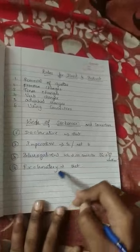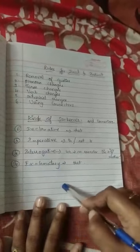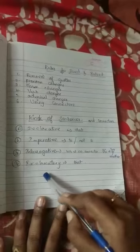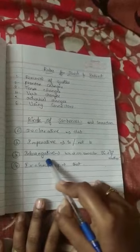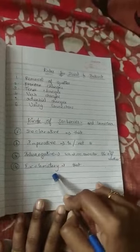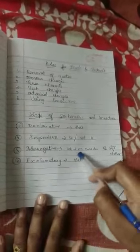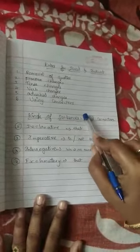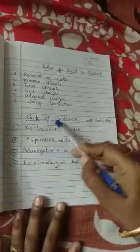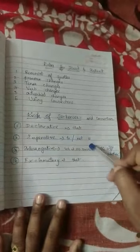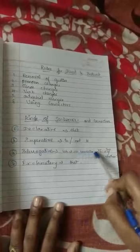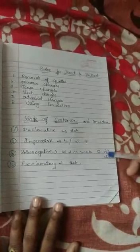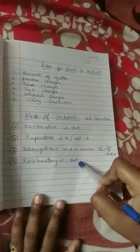Next, exclamatory sentences. Exclamatory sentences have an exclamation symbol, expressing emotions like shock, 'wow', 'hooray', 'alas', or happiness. When you remove all these words and make a normal sentence, we have to use the connector 'that'. Summary: for declarative use 'that', for imperative use 'to' or 'not to', for interrogative WH questions use no connector, for yes-or-no questions use 'if' or 'whether', and for exclamatory use 'that'. Thank you.